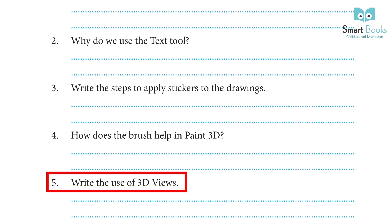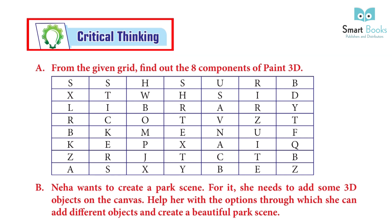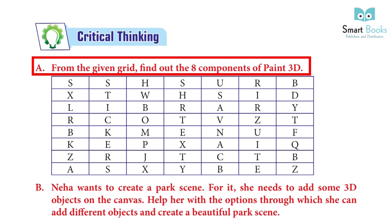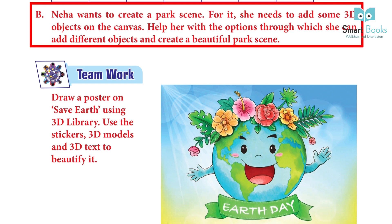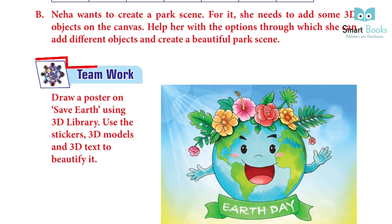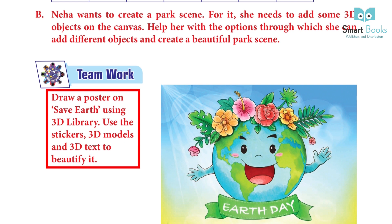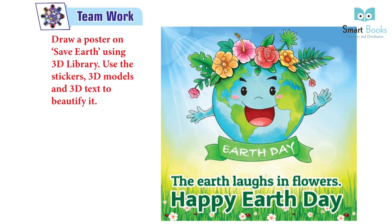5. Write the use of 3D Views. Answer: 3D View enables you to edit from any angle, which means even more accurate and intuitive 3D creation. You can move around your 3D designs. Critical Thinking: A. From the given grid, find out the 8 components of Paint 3D. Answer: Stickers, Library, Text. B. Neha wants to create a park scene for which she needs to add some 3D objects on the canvas. Help her with the option through which she can add different objects and create a beautiful park scene. Answer: Students will do it themselves. Teamwork: Draw a poster on 'Save Earth' using the 3D Library. Use the stickers, 3D models and 3D text to beautify it. Answer: Students will do it themselves.